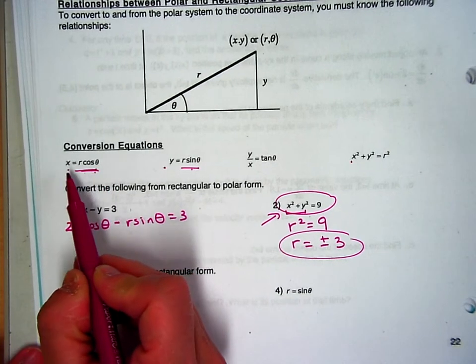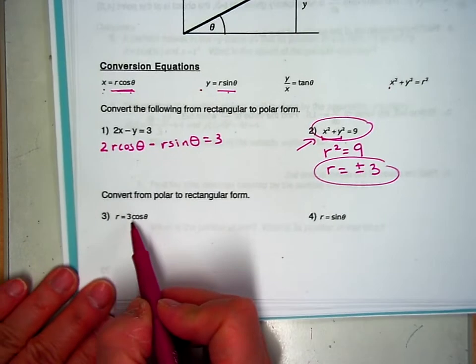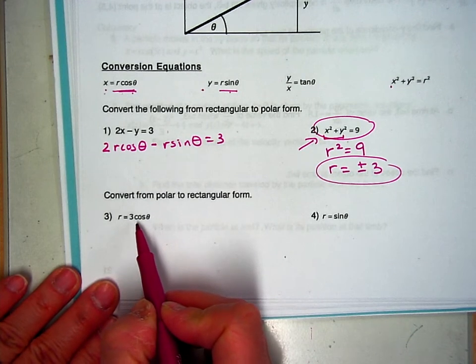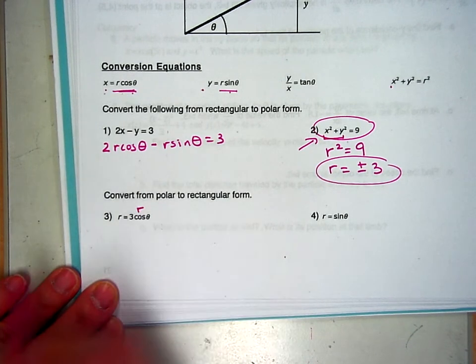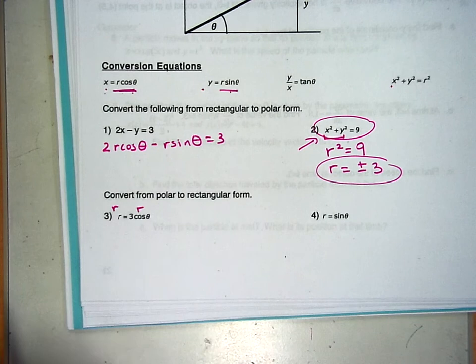But for x, I need r cosine theta, the only thing I have is cosine, so I need an r there. So I'm going to go ahead and multiply the right side by r, but anything I do to the left, I'm going to do to the right.